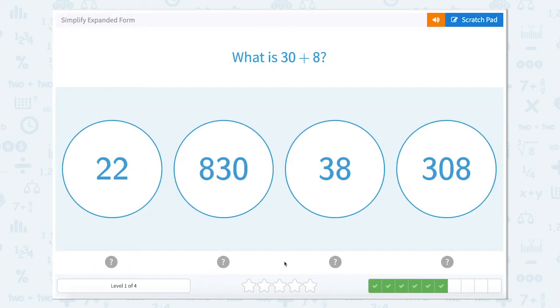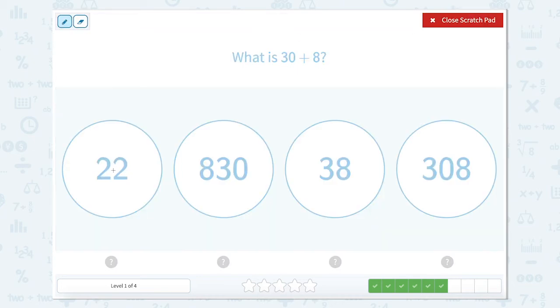What is 30 plus 8? Well, if I have 3 10s and 8 1s, this would be 20 plus 2. This one would be 800 plus 30.